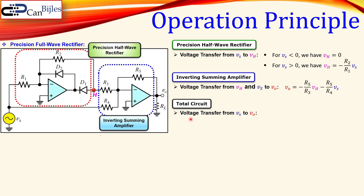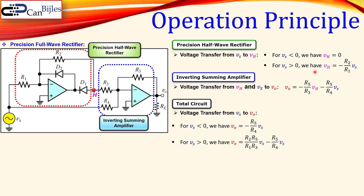We now have the voltage transfer from VS all the way from the source to the output VO. For the condition where VS is negative, since VH is zero, we only have the part with the direct connection from the source to the output using R4 and R5. When VS is positive, we substitute VH into the expression, and the two minus signs cancel, giving us a combined expression relating VO to VS determined only by the resistors.